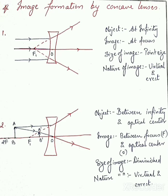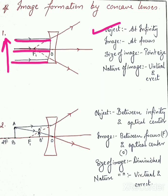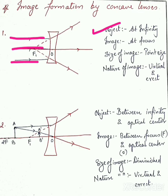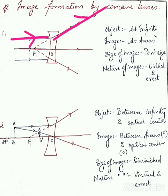Now we'll see the image formation by concave lenses. The first condition is that the object is placed at infinity. Whenever the object is at infinite distance, the incident rays will be parallel to the principal axis. We know the rule that if the incident ray is parallel to the principal axis, then the refracted ray will be passing through focus.